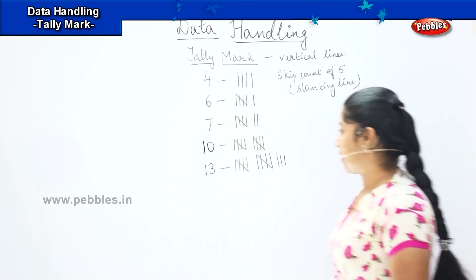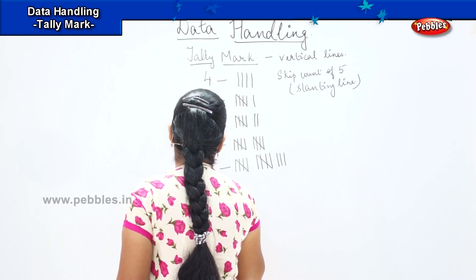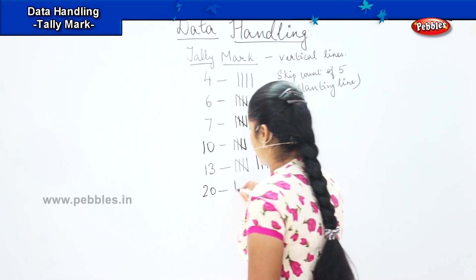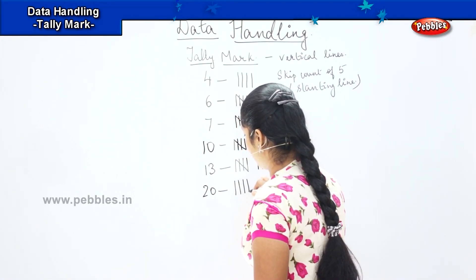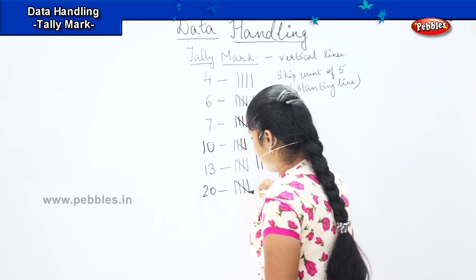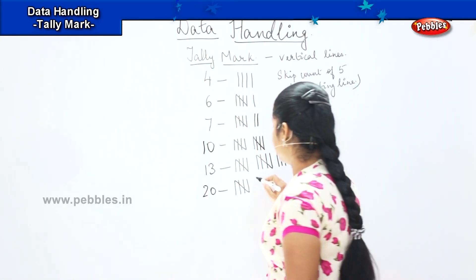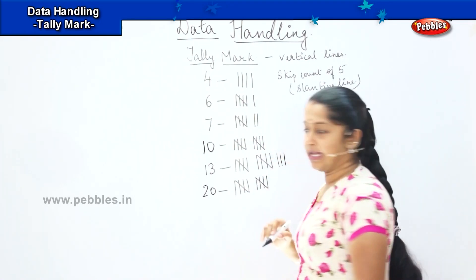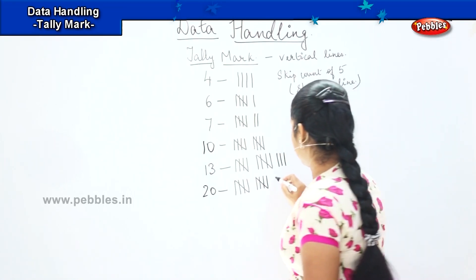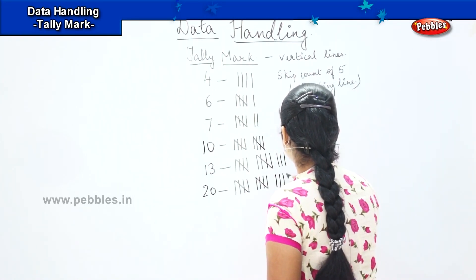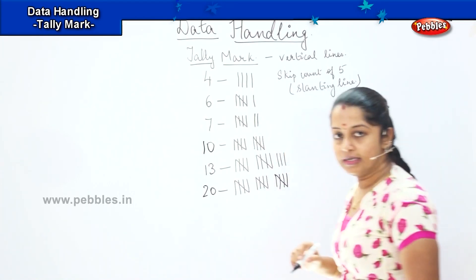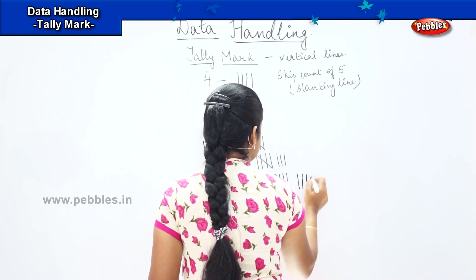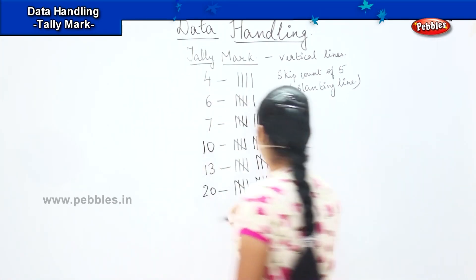Shall we do some more? Now tell me how will you draw 20? 1, 2, 3, 4, then a slanting line 5, then 6, 7, 8, 9, again a slanting line 10, 11, 12, 13, 14, slanting line 15, then 16, 17, 18, 19 and a slanting line 20.